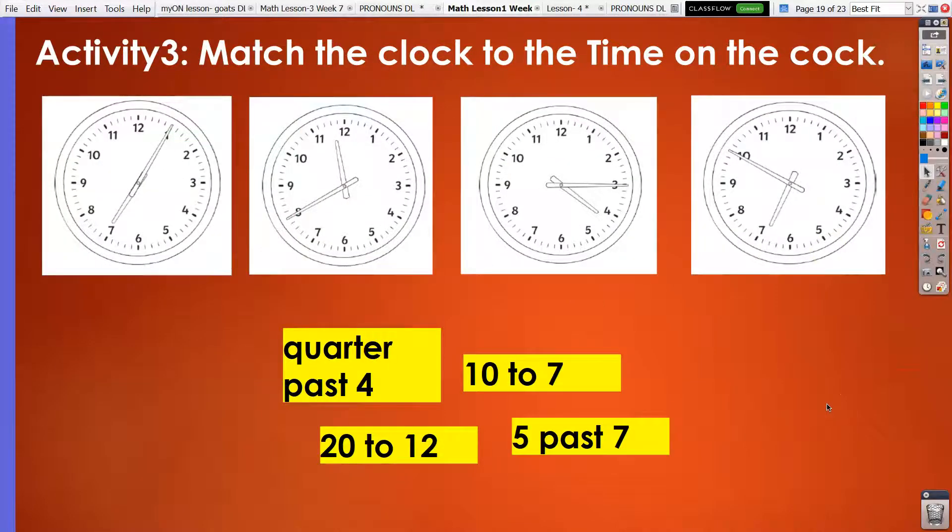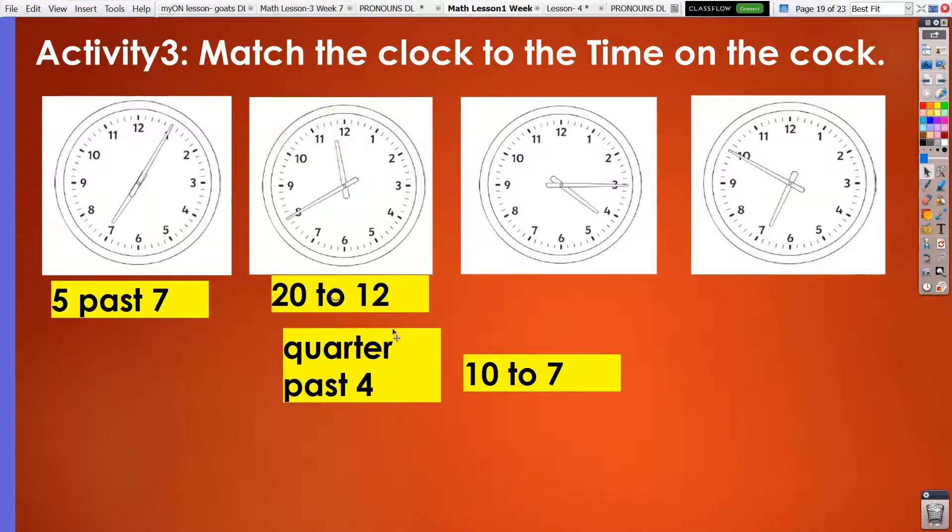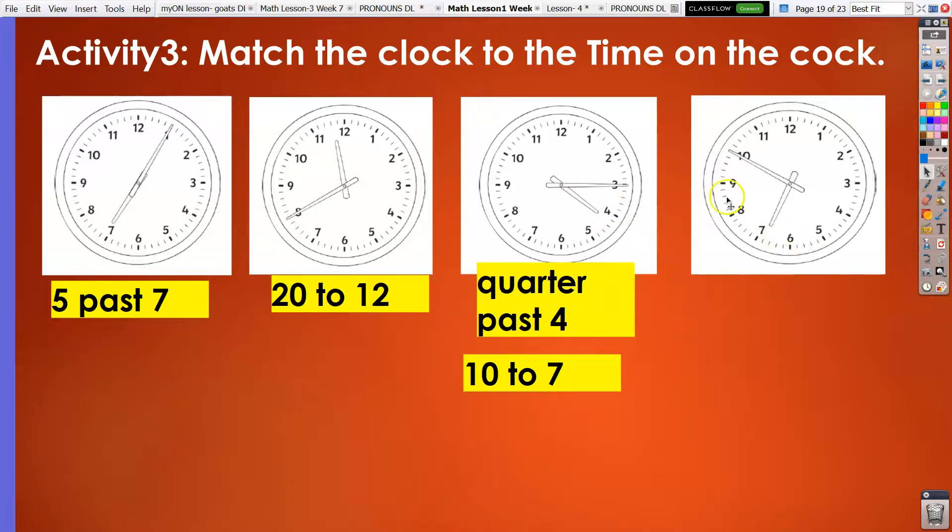Now, I'm going to leave you with this activity. Match the clock to the time on each of the clocks. Pause the video and do the activity. Alright. For the first clock, we have 5 past 7. In here, we have, here on the to side, so we have 20 to 12. Now, we are here on the past side, so we have 5, 10, 15, or quarter past 4. And on this side is the to side, so we have 5, 10, 10 to 7.